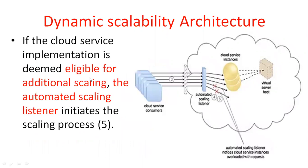Coming to point five: if the cloud service implementation is eligible for additional scaling, the automated scaling listener initiates the scaling process. The automated scaling listener notices the cloud service instances are overloaded with requests. If you want to expand some resources — the instances — then the automated scaling listener sends a message to the consumer.